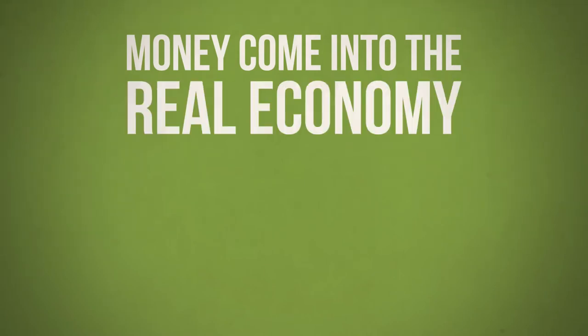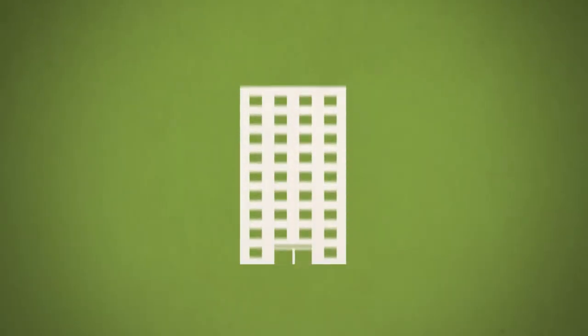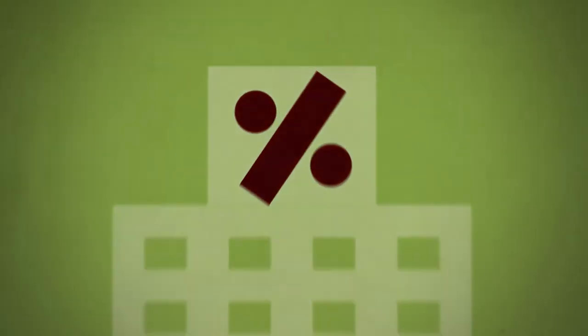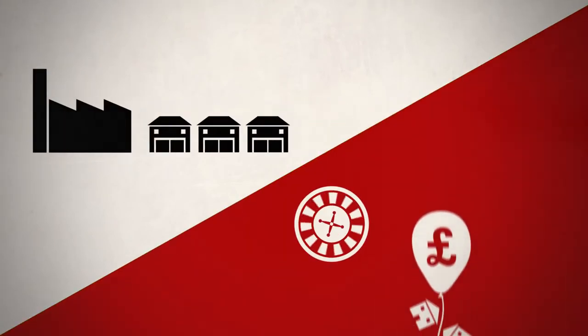Finally, we want to see money come into the real economy before it reaches financial markets and property bubbles. If newly created money was used to fund public spending or cut taxes for ordinary people, then that money would start its life in the real economy. It would create jobs and support businesses, instead of getting trapped in financial and property markets.